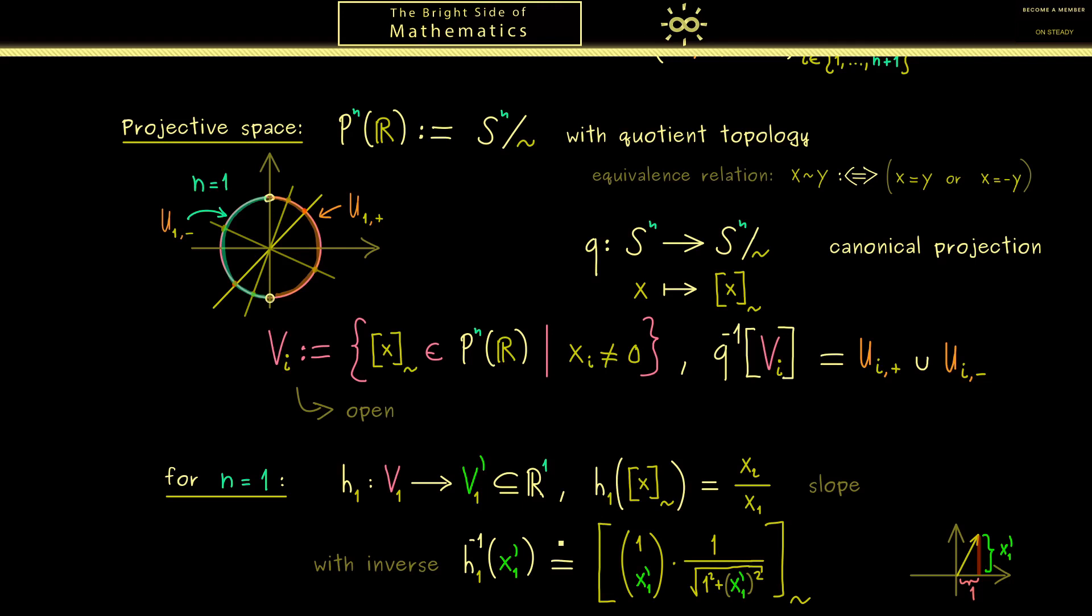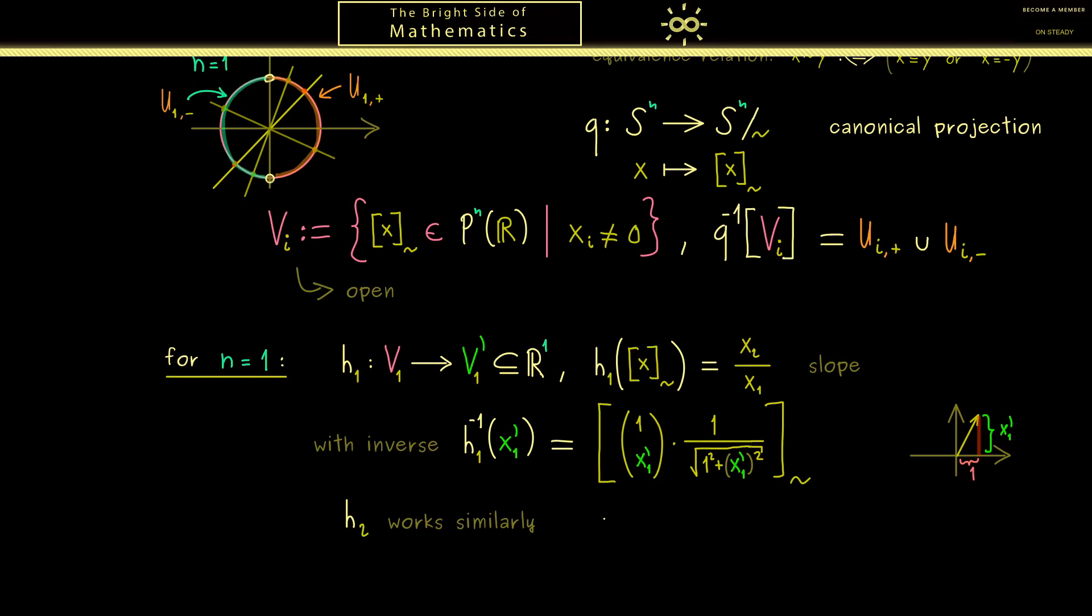In fact, you see V_1' is exactly R^1. And now in a similar way we are able to define h_2. Indeed, we just have to exchange the roles of x_2 and x_1. And then we see we also get a homeomorphism. In other words, this then shows that the projective space P^1(R) is locally Euclidean. And in combination that we already know that the projective space is a Hausdorff space and also second countable, we have a one-dimensional manifold. So you see this is our first abstract example of a manifold. And in the end, this was not so hard to show.